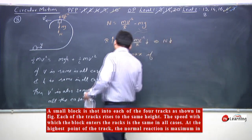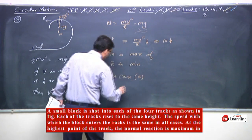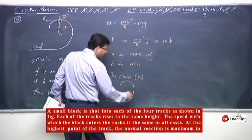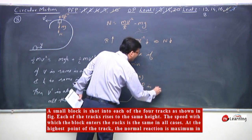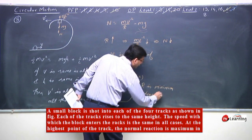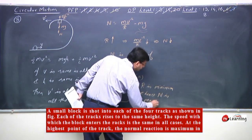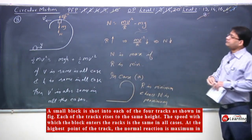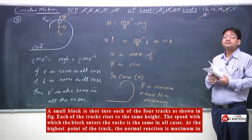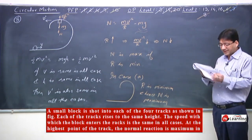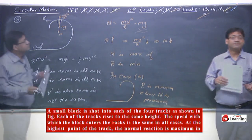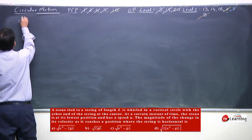In case A, the track is shaped such that r is minimum at the top, and hence N is maximum. So case A is the correct answer. This concludes the 13th, 14th, and 15th objectives. Let's start the 13th objective at Level 2.